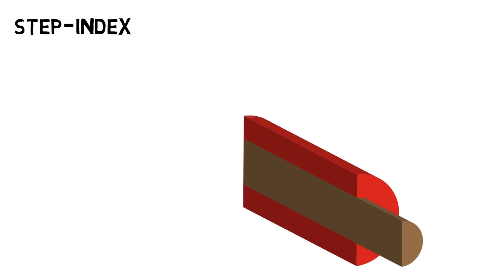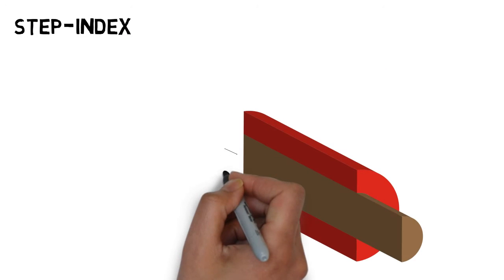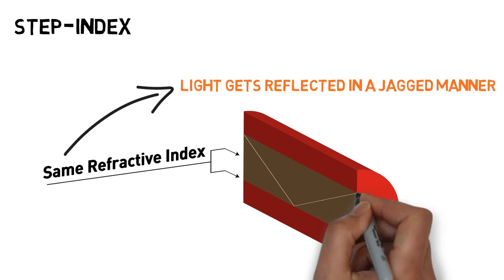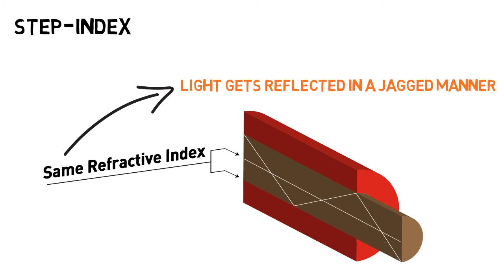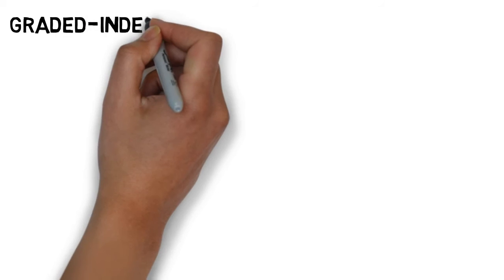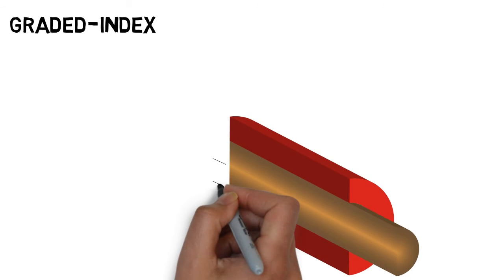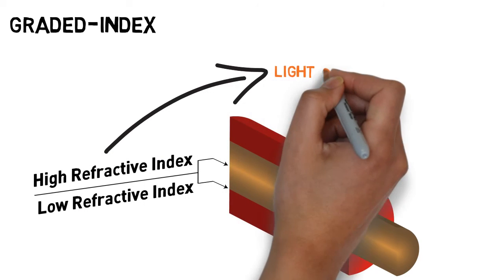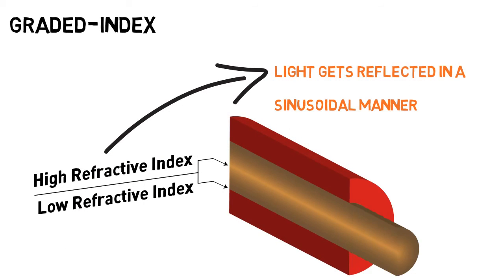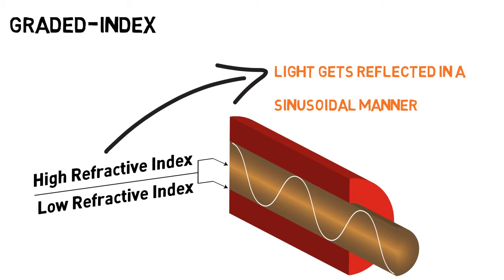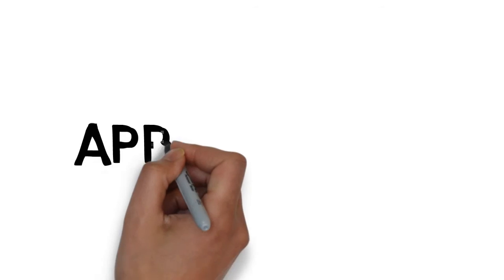Step index fibers possess a homogenous refractive index throughout the core such that light gets reflected in a jagged manner throughout the cable. Conversely, the refractive index of the core of a graded index fiber cable gets progressively greater as it approaches the central axis. As a result, light gets reflected in a sinusoidal manner as it travels from one end to the other.